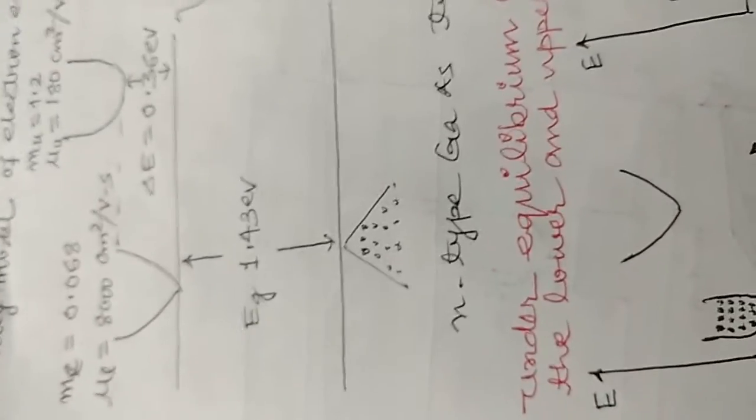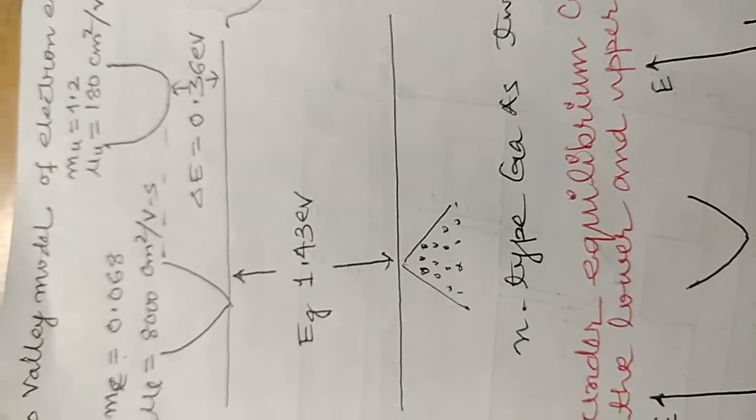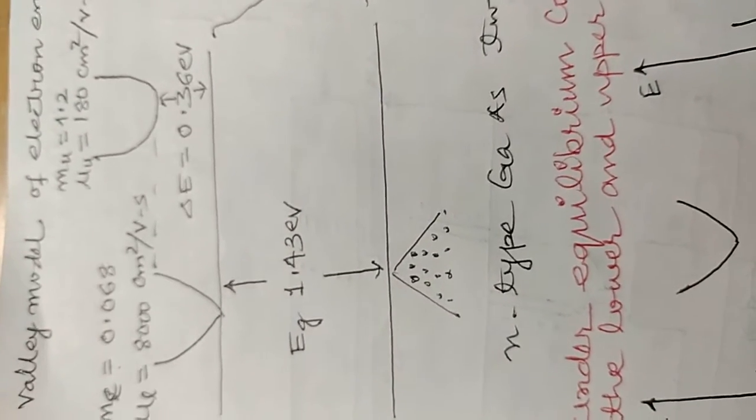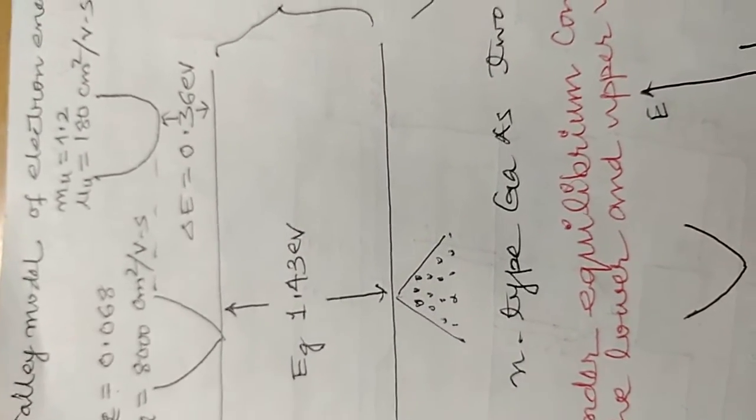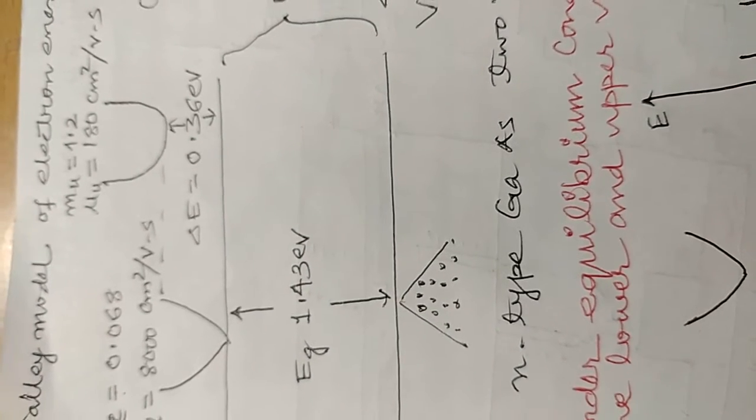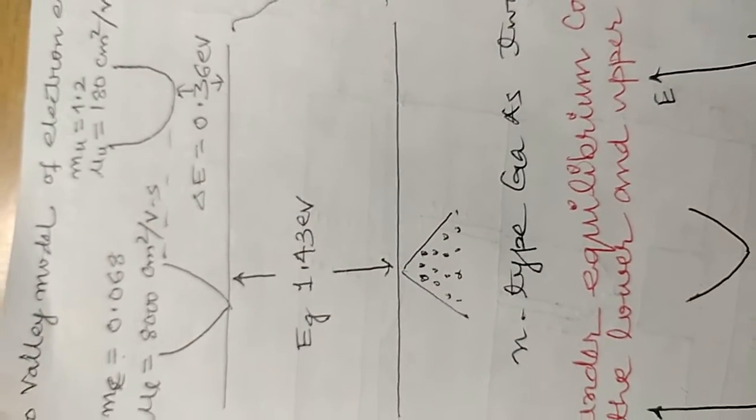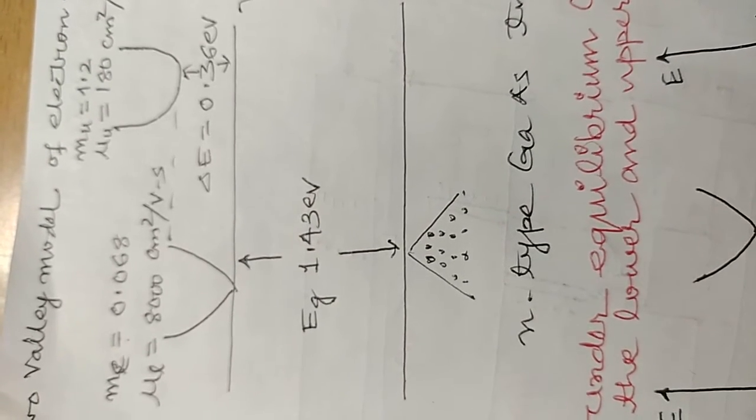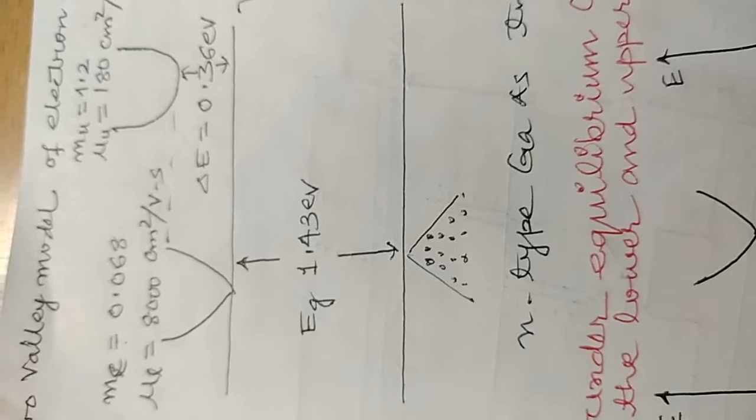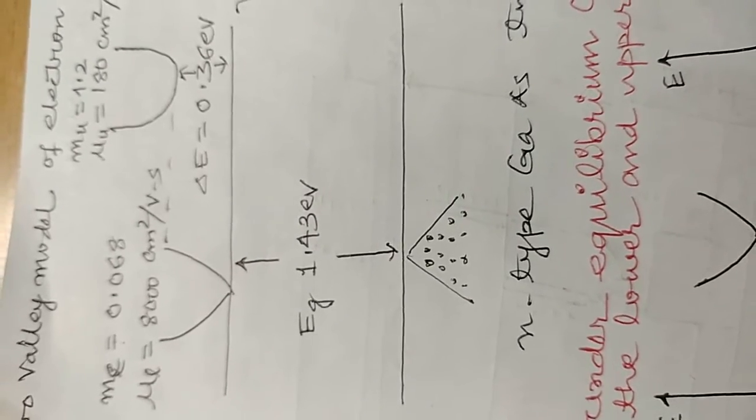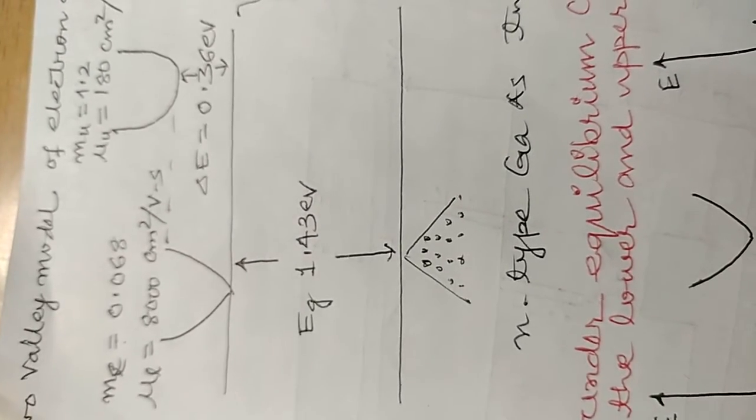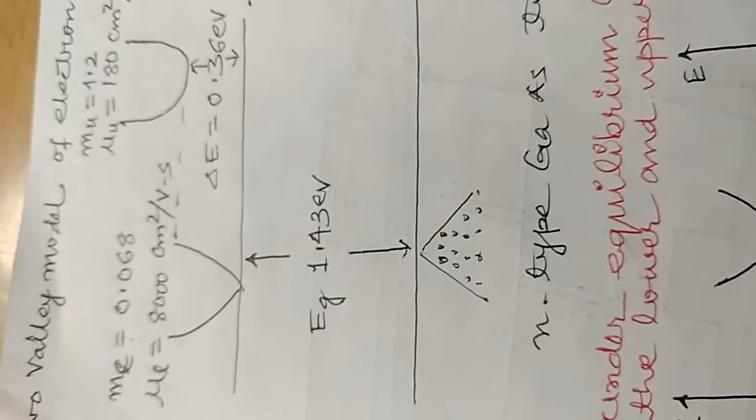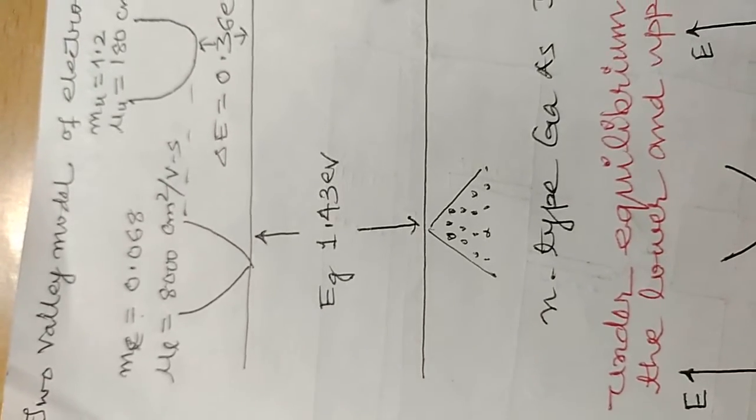Transferred electron devices are made up of compound bulk semiconductors such as gallium arsenide, indium phosphate, and cadmium telluride. The requirement is that these semiconductors must have multiple valleys of energy levels in the conduction band of the semiconductor. We have taken a two valley model.